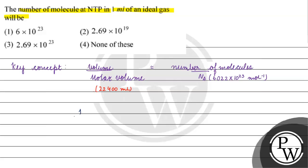Now, we know the volume is 1 ml. Molar volume 22,400 milliliters equals to number of molecules. We know the volume, and Avogadro's number is 6.022 into 10 to the power of 23 mol inverse. Now see,